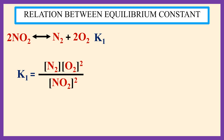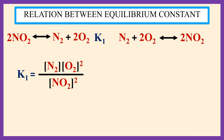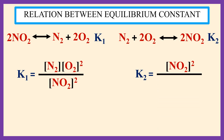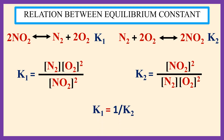For the reverse reaction N₂ + 2O₂ → 2NO₂, the equilibrium constant is K₂. K₂ is equal to the square of the concentration of NO₂, divided by the concentration of N₂ multiplied by the square of the concentration of O₂.